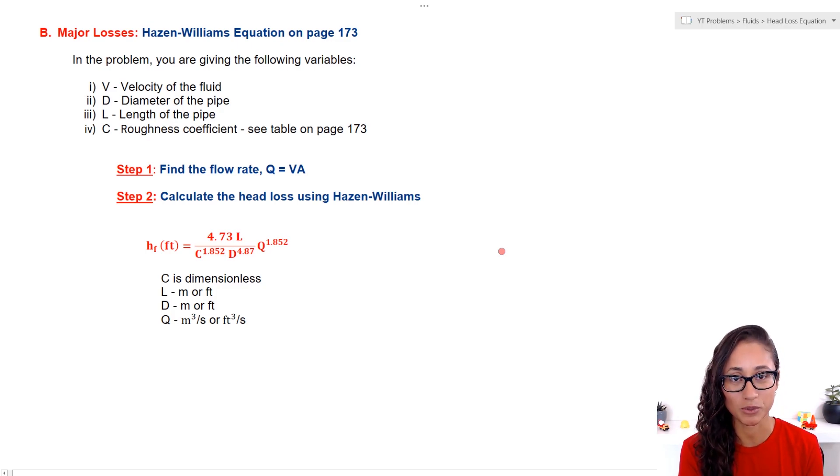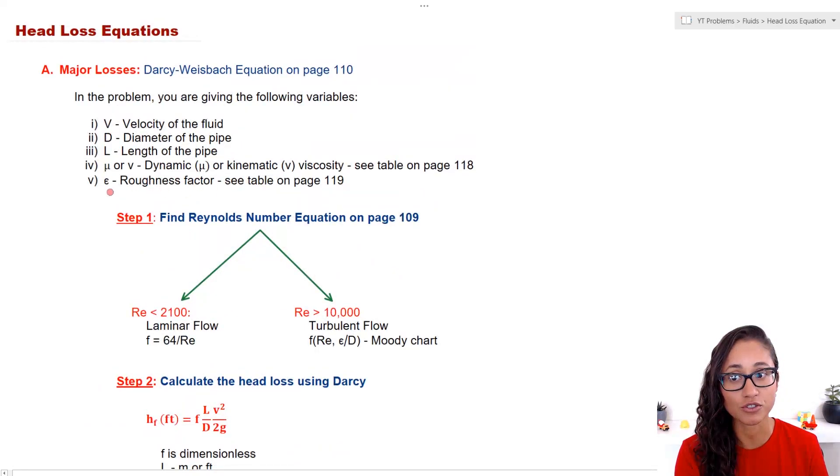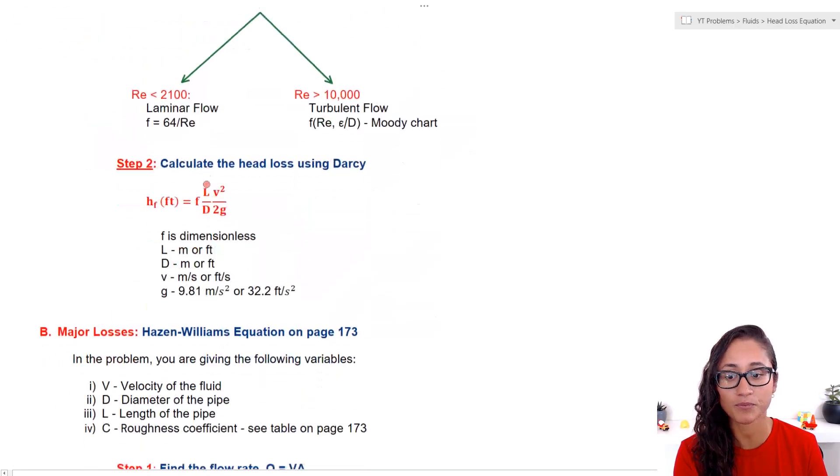Let's go over Hazen-Williams. In a problem, if you are given roughness coefficient, you have to use Hazen-Williams. Don't confuse roughness coefficient with the roughness factor, because that is for Darcy.